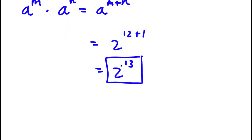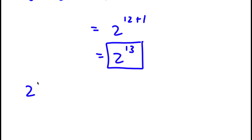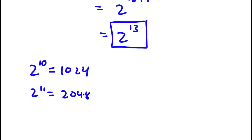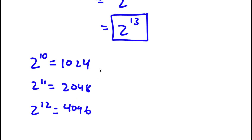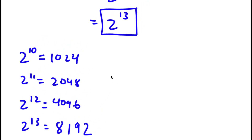So 2 to the power of 13 is my answer. I'm going to go ahead and simplify it numerically. We know that 2 to the power of 10 is 1,024. So 2 to the power of 11 is double that, which is 2,048. And 2 to the power of 12 is double of 2,048, which is 4,096. So 2 to the power of 13 is double of 4,096, which is 8,192. So 8,192 is my answer.